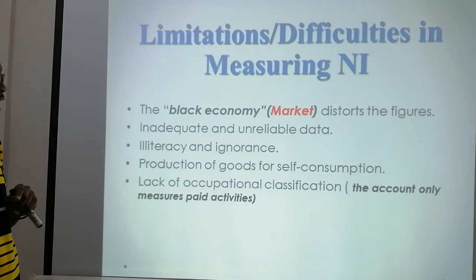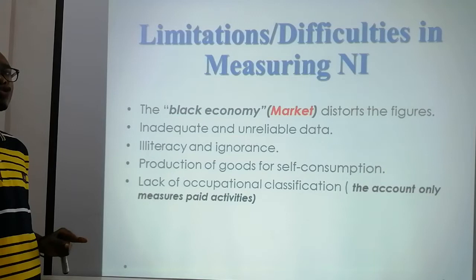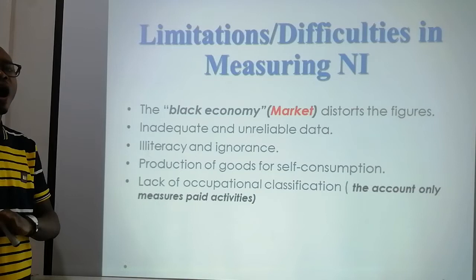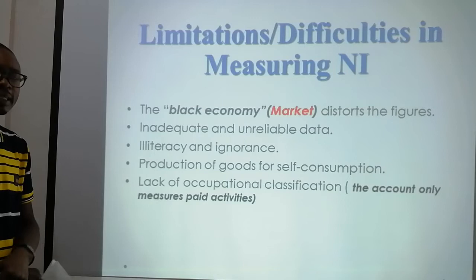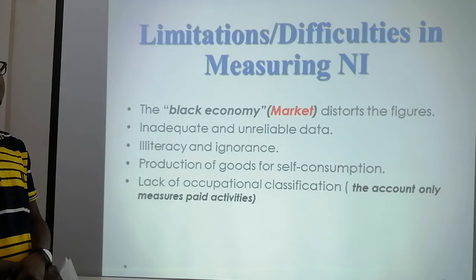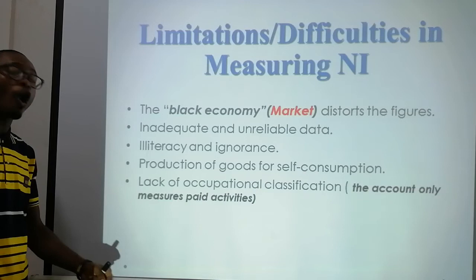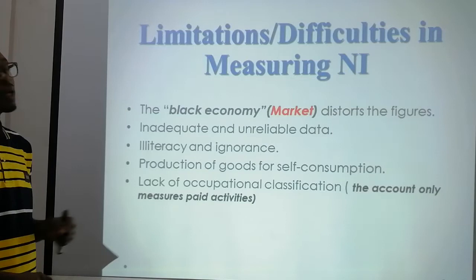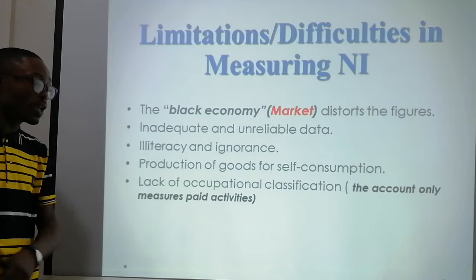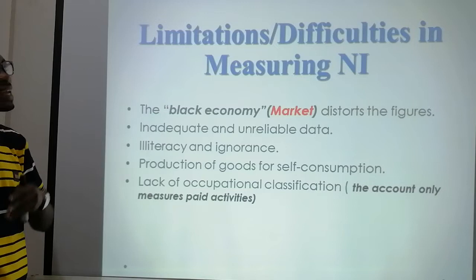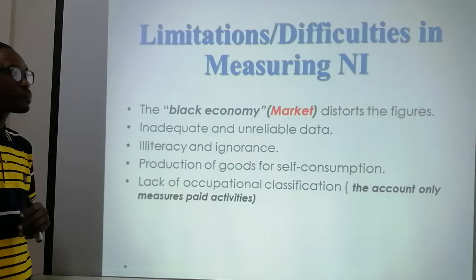The last difficulty is lack of occupational classification. The accounts only measure paid activities. In this country, we don't have proper classification of occupations — only government workers are on record. Someone may be working in a house, receiving a small token, and that person will not pay tax. All these things make national income very difficult to measure or count at the end of the year.